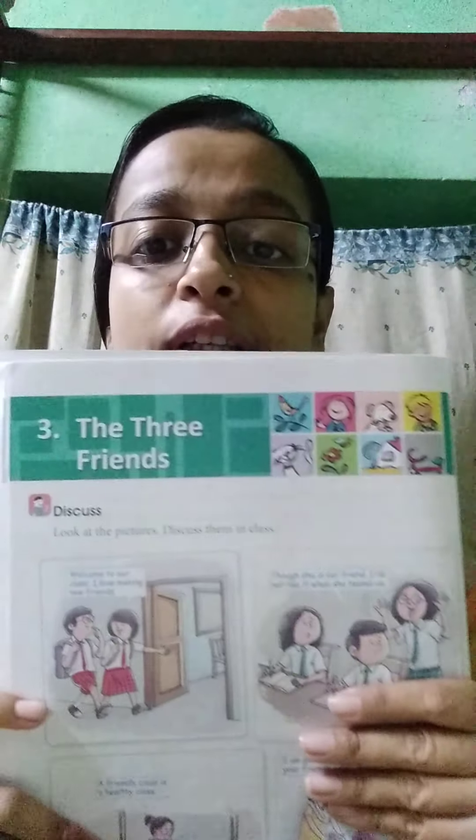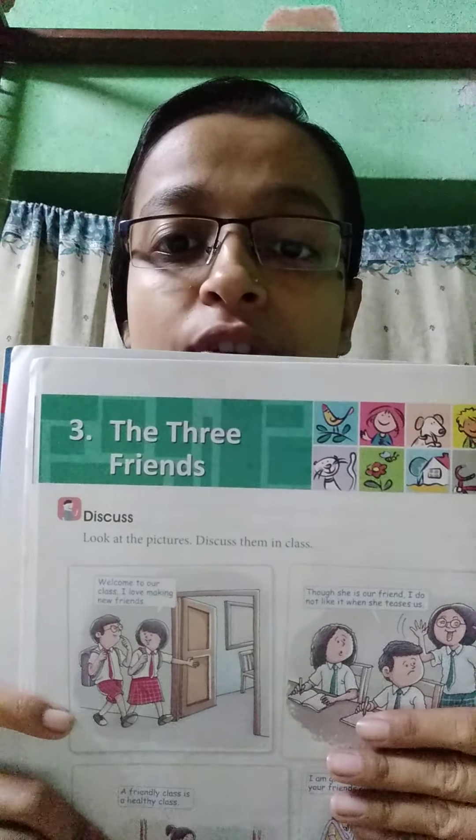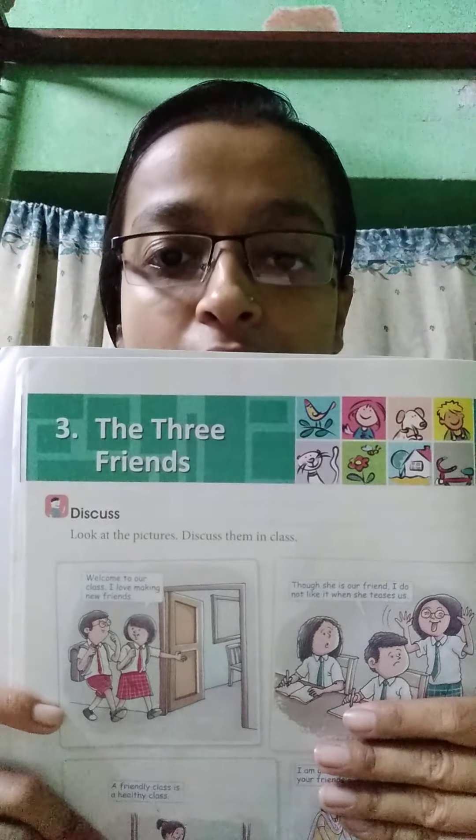Hello students, today I will be taking your value education class of class 3. The chapter we were doing is chapter number 3, 'The 3 Friends'. We have completed the reading and today we will do the exercise part. So all of you turn to page number 22 and you can see the exercise part over here.